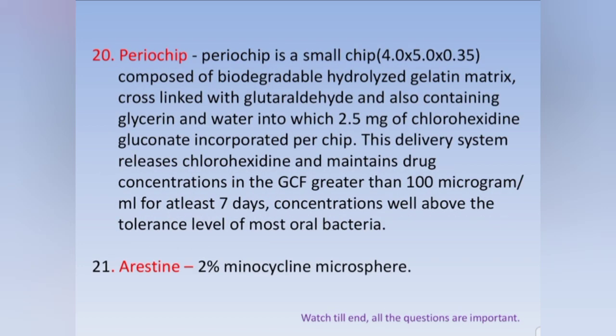Periochip and Arestin are two local drug delivery systems. Periochip contains chlorhexidine. The size of periochip is also important — it has been asked in previous questions: 4.0 × 5.0 × 0.35 mm. It is composed of a biodegradable hydrolyzed gelatin matrix cross-linked with glutaraldehyde, also containing glycerin and water.